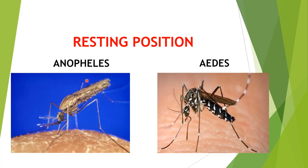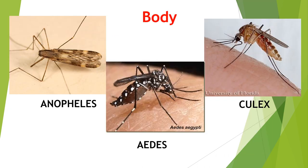Here you can see the resting positions of Anopheline and Culicine. In the case of Anopheles, when at rest, the body is at an angle to the surface. In the case of Culicine, it exhibits a hunchback when at rest. In the case of Anopheles, only wings are spotted — remember, only the wings of Anopheles are spotted. While in the case of Aedes, there are alternate white bands all over the body, due to which the Aedes mosquito is also called the tiger mosquito. The Culex mosquito does not have any spots over the body.